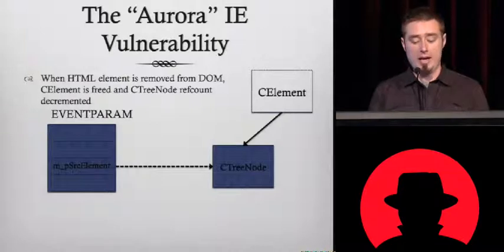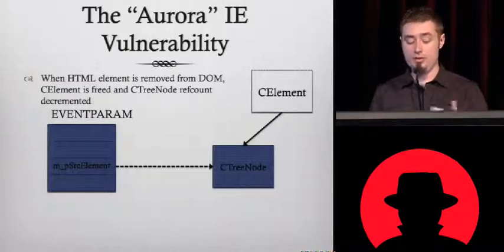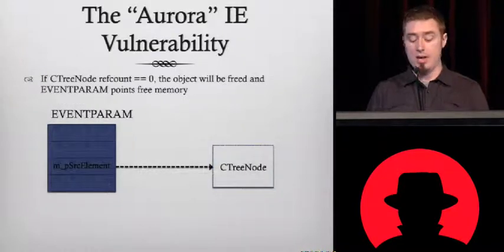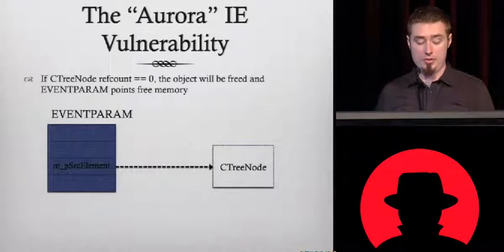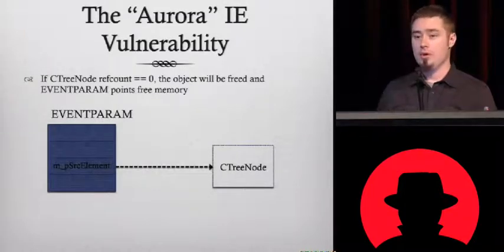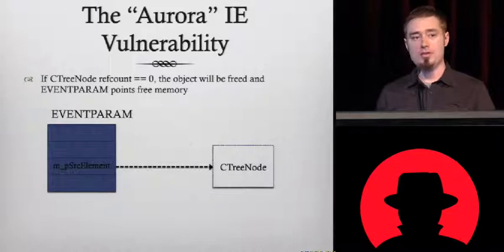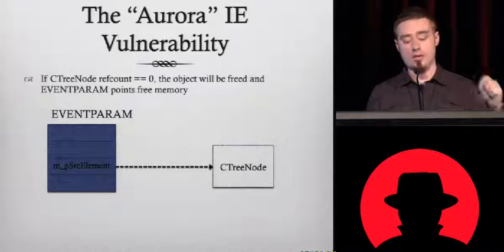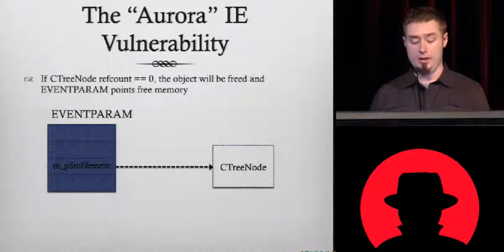The element object will get freed, and in the process of doing so, it'll see that it has a pointer to cTreeNode and will decrement the reference count to cTreeNode. What you have there is that the cTreeNode reference count becomes zero, so the object gets freed, and event params still retains a pointer to freed memory. This is the classic use-after-free vulnerability.